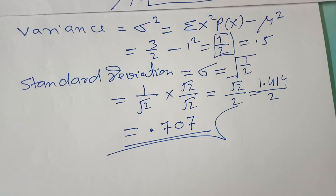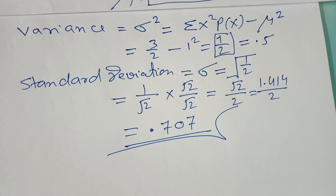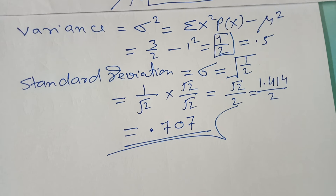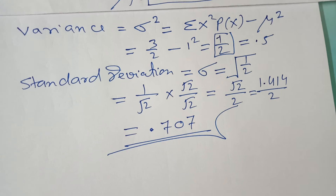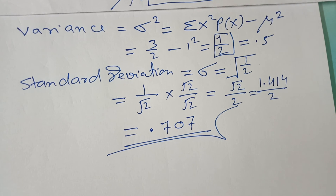So that's all in this video. We learned what probability distribution is, what a random variable is, and how to find the mean, variance, and standard deviation — terms used day to day in probability theory. If you found this helpful, please share it with others. Thank you very much.